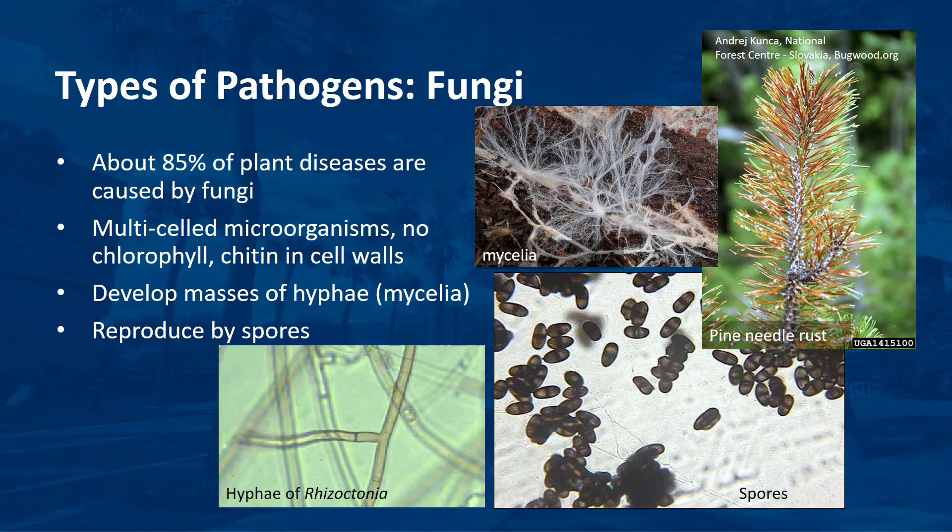About 85% of plant diseases are caused by fungi—multi-celled microorganisms that may be seen without a microscope during certain stages of their life cycles. Fungi have no chlorophyll, and their cell walls are composed of chitin and other polysaccharides instead of cellulose, which composes plant cell walls. Many species of fungi can be identified by the microscopic spores they produce—reproductive structures that aid in dispersal and survival. Some fungi develop masses of hyphae, collectively referred to as mycelia, and spores that are readily visible. Some fungi have no spores, such as Rhizoctonia, which can be identified microscopically by the very characteristic right-angle branches of its fungal threads, hyphae.